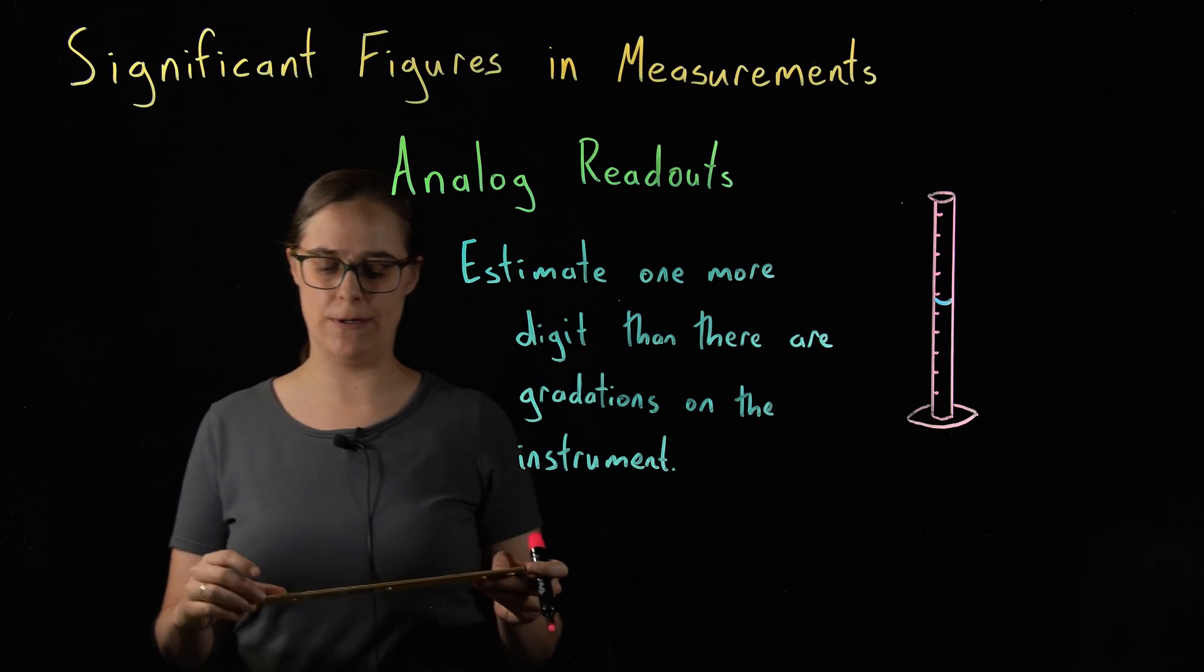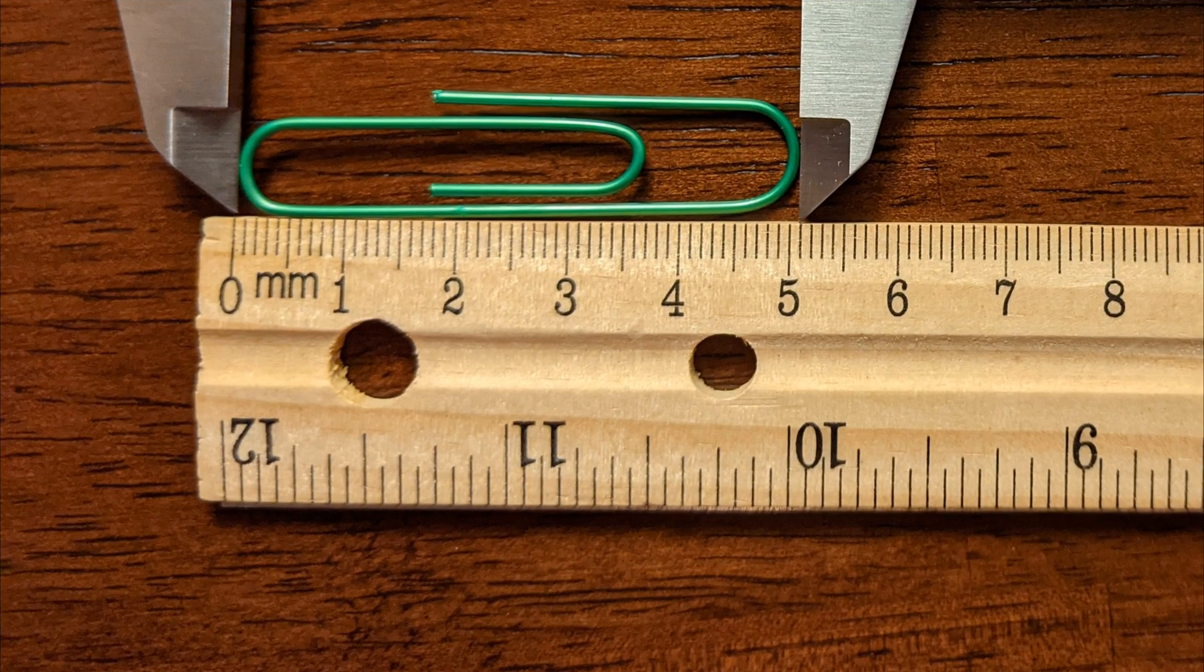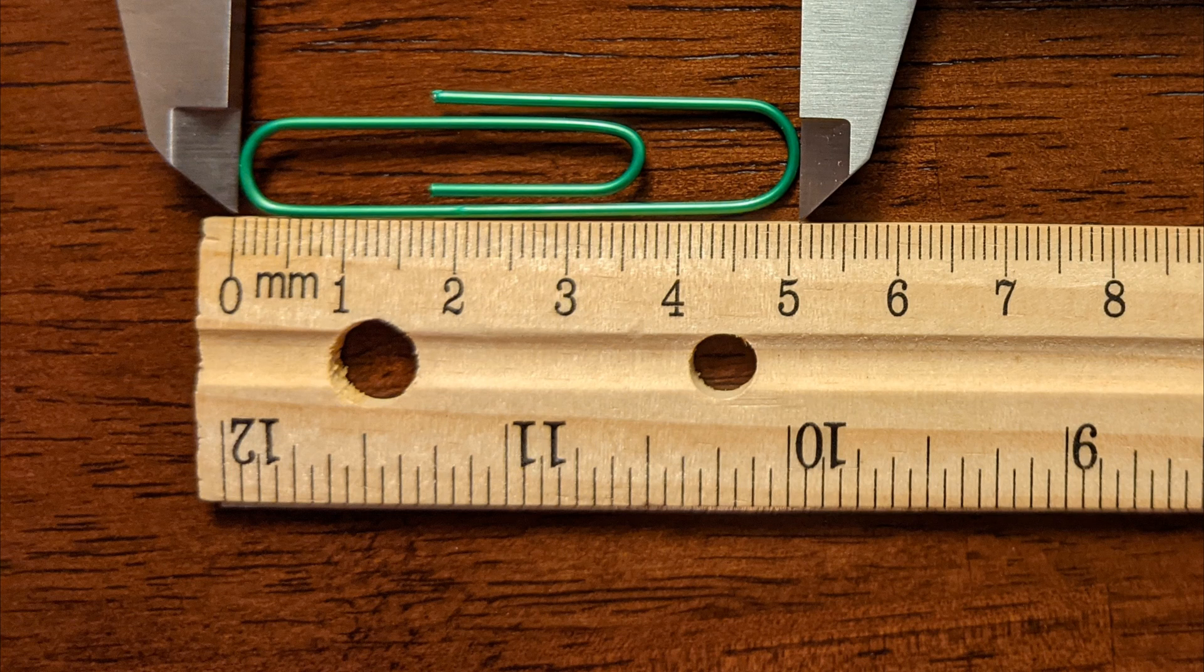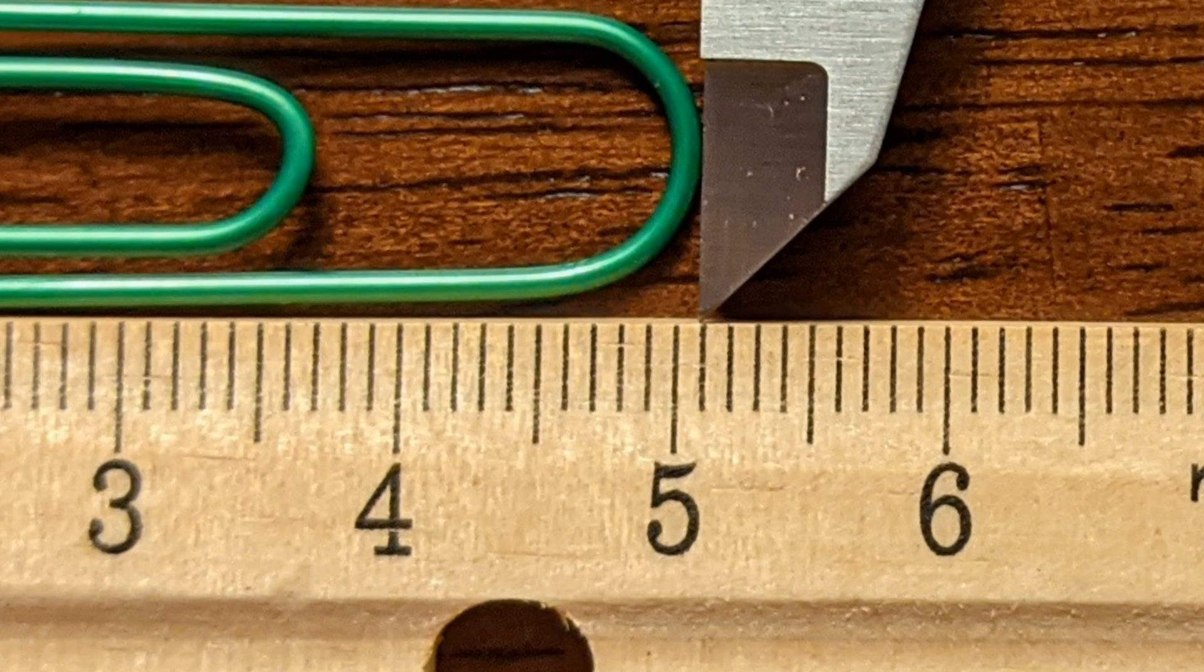Let's take a close look at this ruler. The larger lines that are numbered are each 1 centimeter. The smaller lines between them are each 0.1 centimeters. So the length of my paperclip is somewhere between 5.0 and 5.1 centimeters. I need to estimate one more digit.